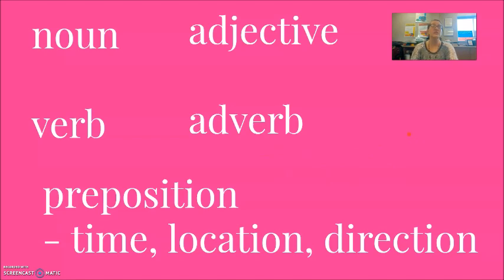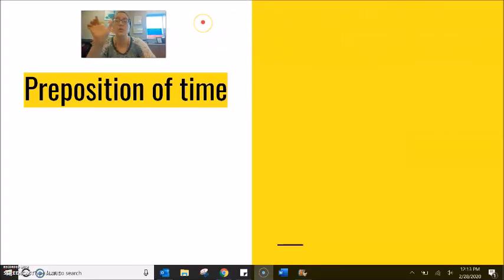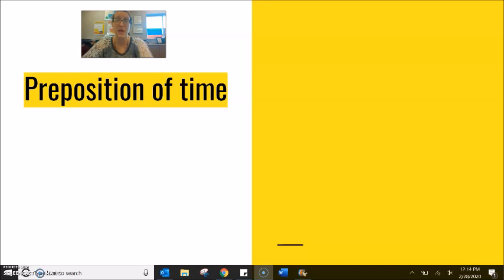They give us information about position in time. Today we are only focusing on for, since, and ago. Of course there are other prepositions of time — things like from, until, to, through, throughout. But today we are only talking about for, since, and ago.